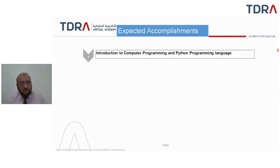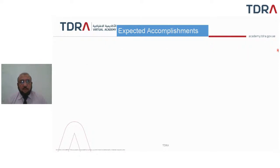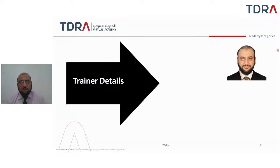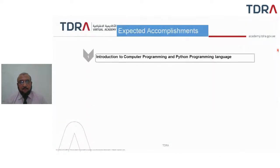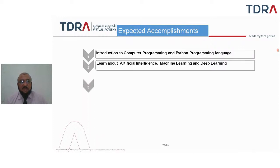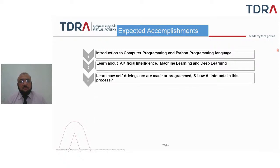The expected outcome of this course is how we will build AI solutions. We have the following expected accomplishments: first, introduction to computer programming and Python; then we will learn about artificial intelligence, machine learning, and deep learning; then we will learn about self-driving cars, how they are made, their components, and how AI interacts in this process.